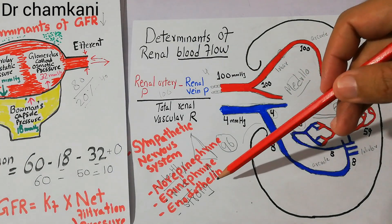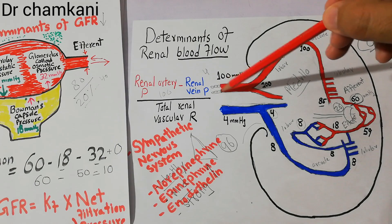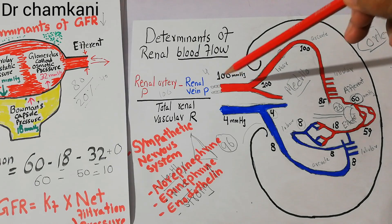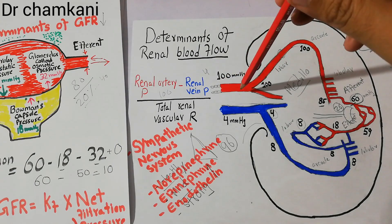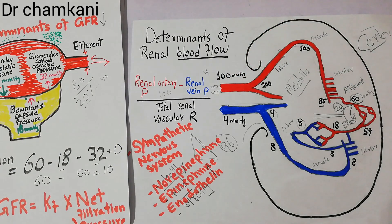Endothelin is not only secreted when a blood vessel is damaged, but is also sometimes secreted in chronic diseases such as toxemia of pregnancy, acute renal failure, or chronic uremia — conditions which will be discussed in their proper sections.